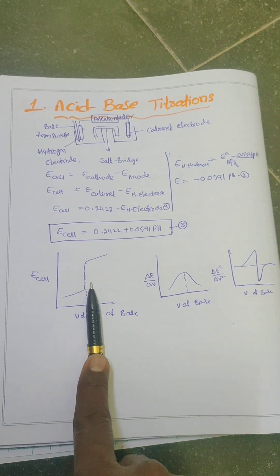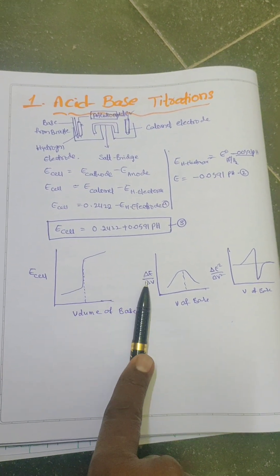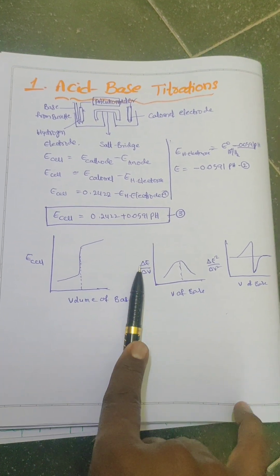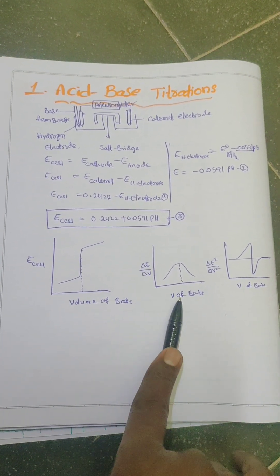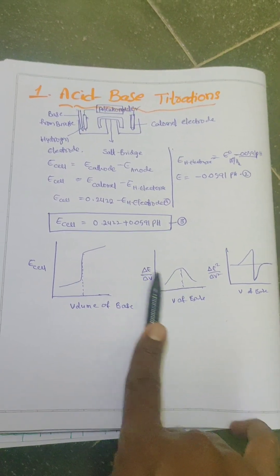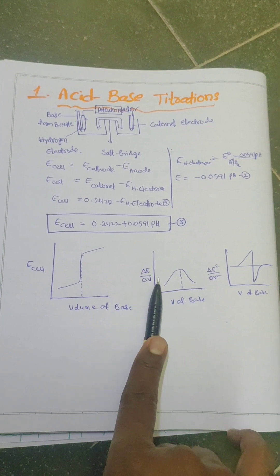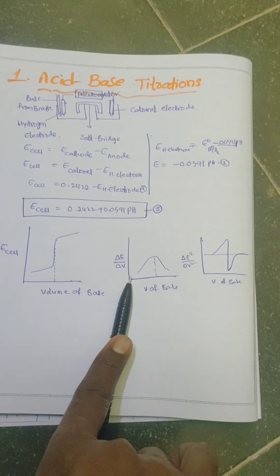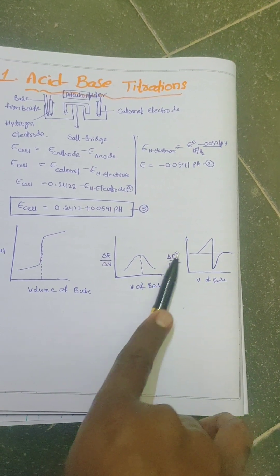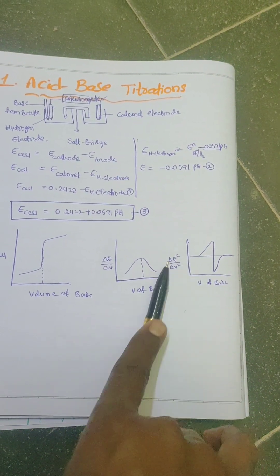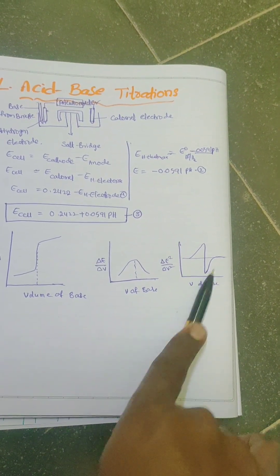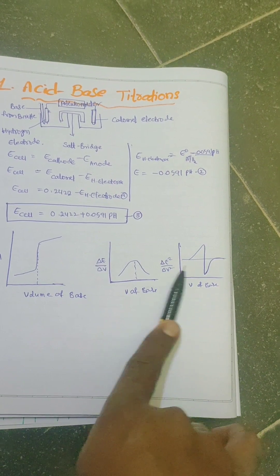To know the exact end point, we may take the first differentiation graph — dE/dV plotted against volume of base — known as the first order differentiation curve. To know a more accurate end point, we may also take the double differentiation: d²E/dV² plotted against volume of base, known as the double differentiation graph.